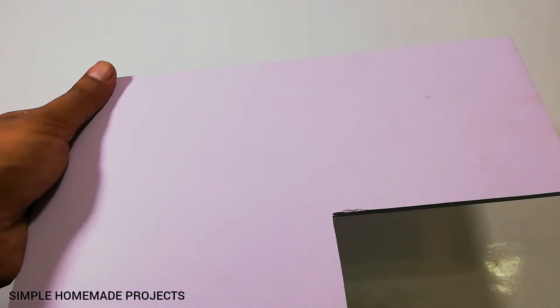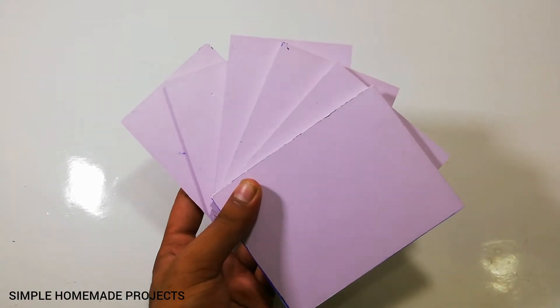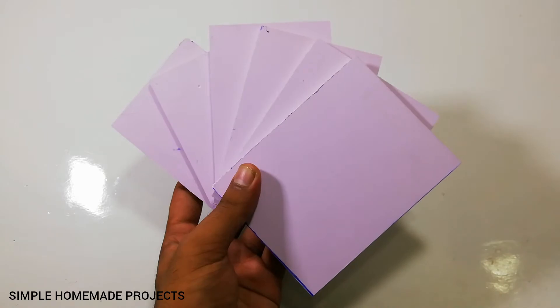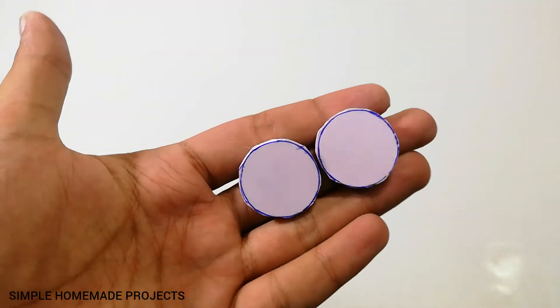First of all, cut the PVC foam board in order to make housing for the dispenser. Cut two more round pieces and fix them together using super glue.